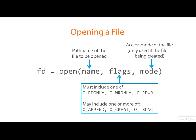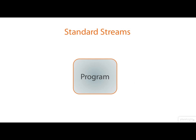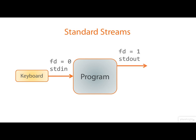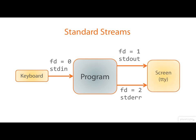We can predict that the value we'll get back from our first open call will be 3. Where does this apparently random number come from? Well, you're guaranteed to get the lowest available descriptor. When the program starts, it will almost certainly have descriptors 0, 1, and 2 already open. These represent the program's standard input — typically connected to the keyboard — standard output (file descriptor 1), and standard error (descriptor 2), which are typically connected to the screen, or in Linux speak, to the tty device.